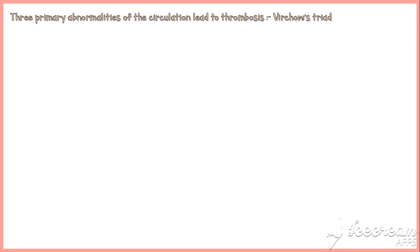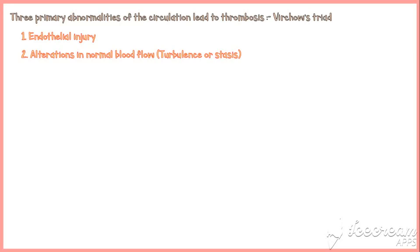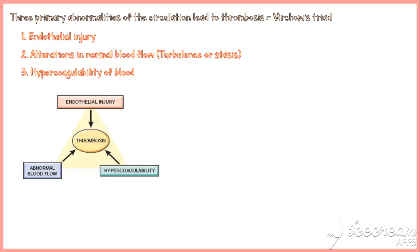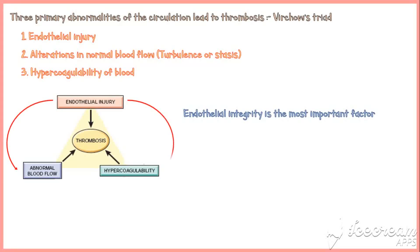Now we know how our blood prevents thrombosis in normal physiological conditions. Three primary abnormalities of the circulation lead to the development of thrombosis, called Virchow's triad. They include endothelial injury, alterations in the normal blood flow (either turbulence or stasis), and hypercoagulability of blood. These factors can promote thrombosis independently or in combination, and they are also interconnected. Endothelial integrity is the most important factor to maintain normal blood flow.